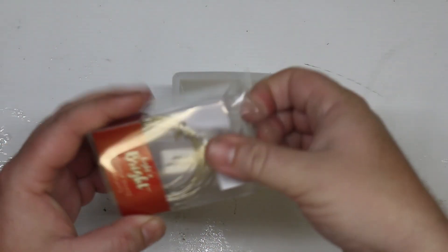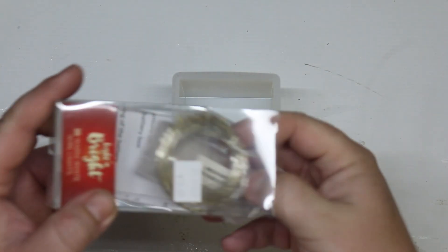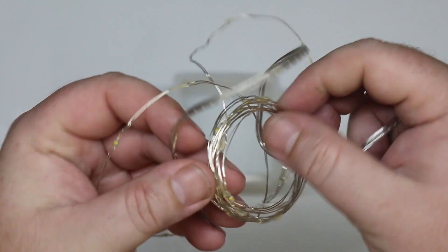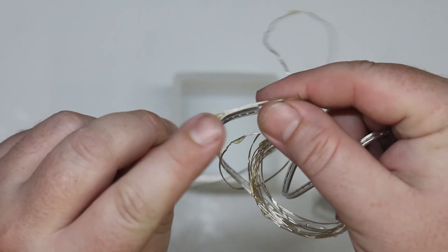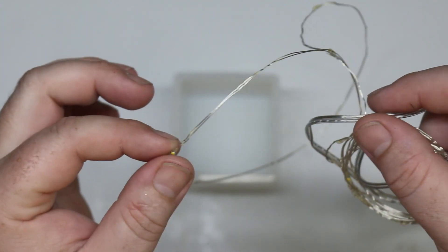So the first thing I need to do is position my lights inside the mold. These particular lights are an LED light and they're a wire string light, so they've just got these little LEDs positioned every so often along a piece of wire.